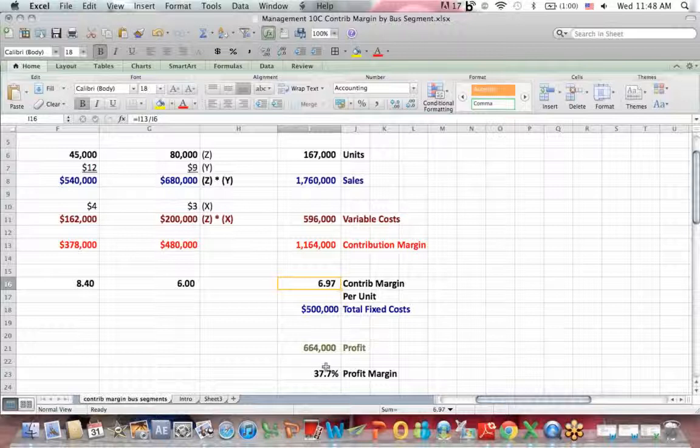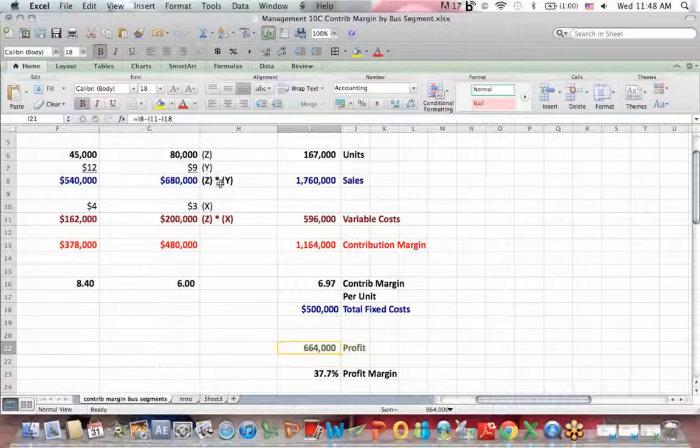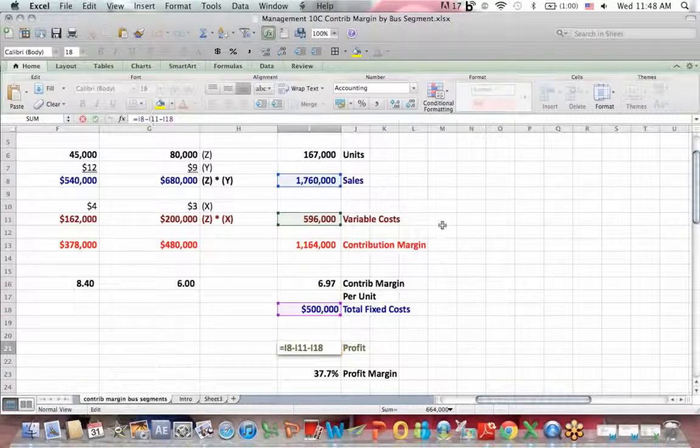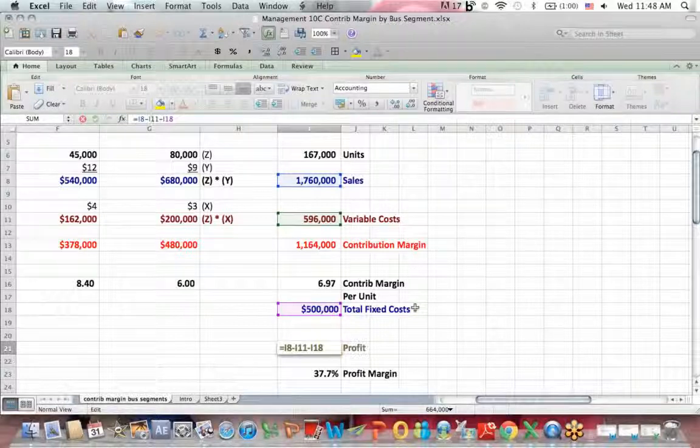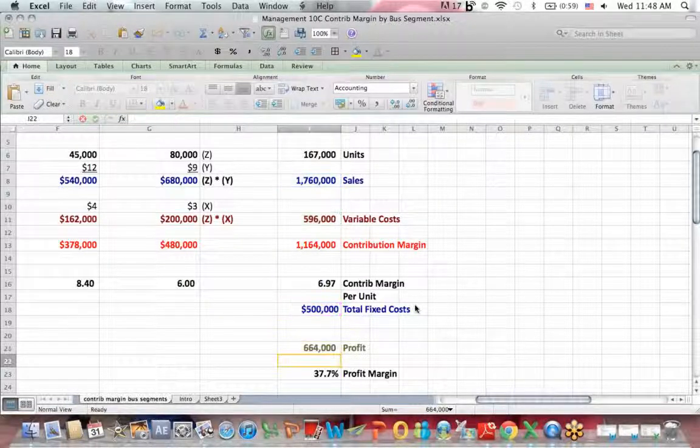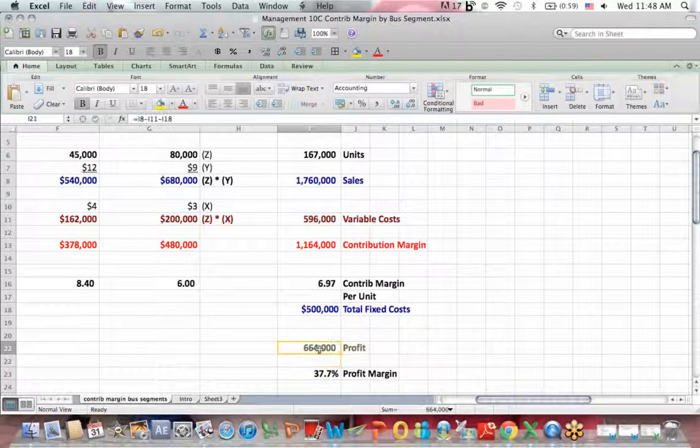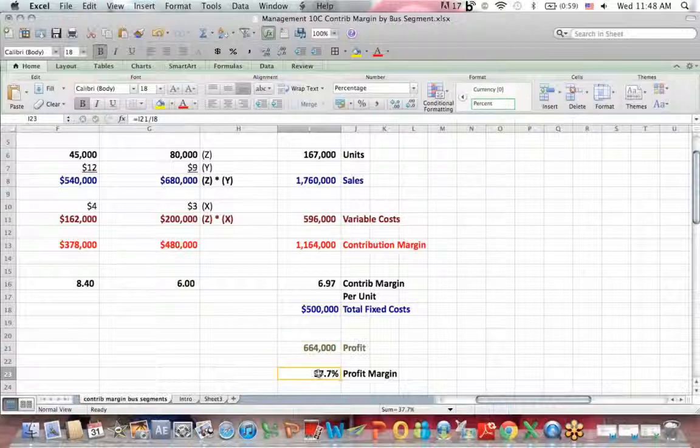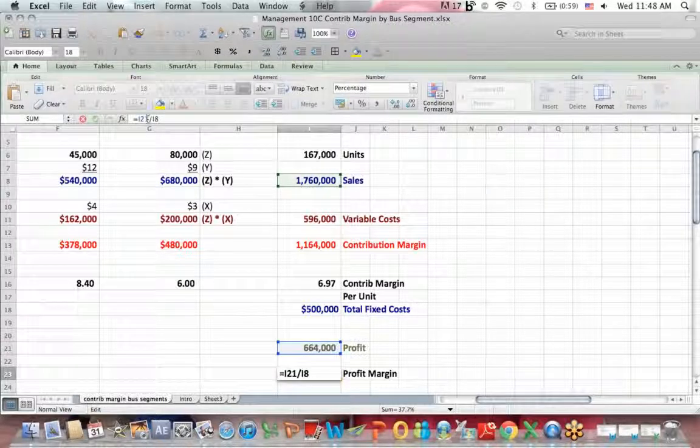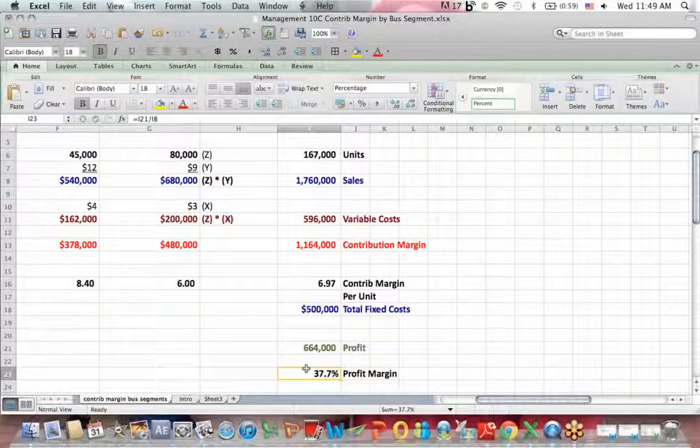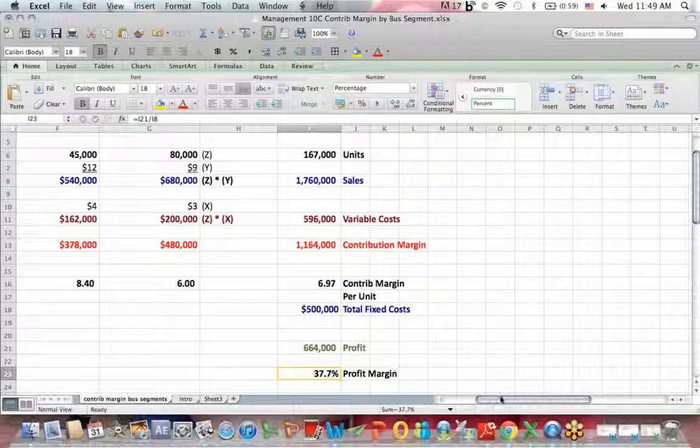I also take sales in blue, less variable costs in brown, less fixed costs in blue to come up with my profit number, 664, and finally, I do profit margin, which says for every dollar that I sell, how much of that dollar is profit. Take profit in green divided by sales in blue, and in this example, about 37 to 38 cents of every dollar I sell is profit.